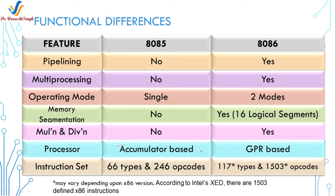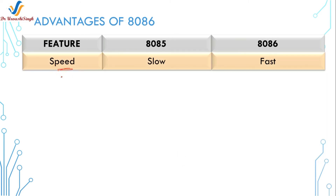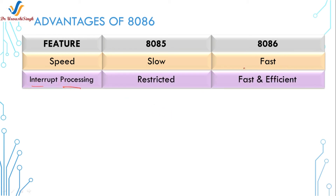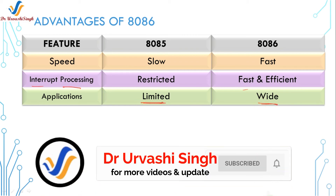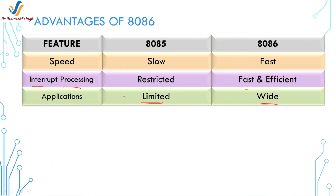Now let's see the advantages of the 8086 microprocessor over the 8085. First is speed: as seen from the operating frequency, the 8086 is faster than the 8085. Next is interrupt processing: the 8086 is faster and more efficient in handling interrupts than the 8085. Next are applications: the 8086 has a wider area of application, including traffic light signal control, small embedded systems, and scientific calculators. The 8085 has been replaced in many earlier applications such as washing machines and microwave ovens, though it is still used in small calculators and simple programming.